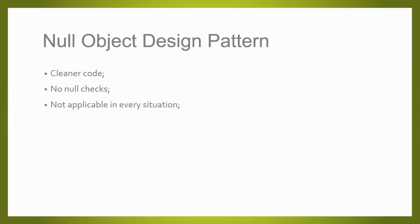To finish, let's talk about the Null Object design pattern and how it can help us avoid 'object reference not set to instance of an object' exceptions. This is a design pattern used to avoid most of the null checks we talked about before. With this design pattern, we would not have to do many validations to check if the object is null or not, giving us cleaner code. However, this pattern is not easy to apply and cannot be used in every situation — it is a somewhat complex design pattern. Let's check in Visual Studio how it works.